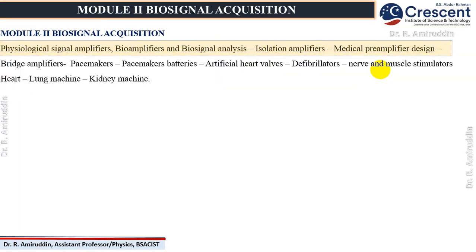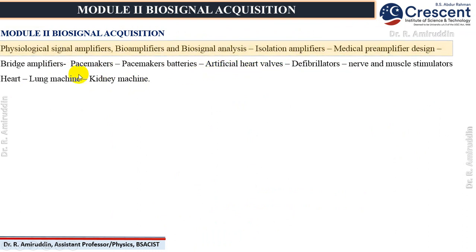This will be the syllabus of the course. The first part will be about the bioamplifiers, the second part will be about the pacemakers, the third part will be about artificial heart valves, and the final part will be about the kidney machine. In particular, the artificial heart valves and the heart and lung machine is actually the cardiopulmonary bypass surgery.